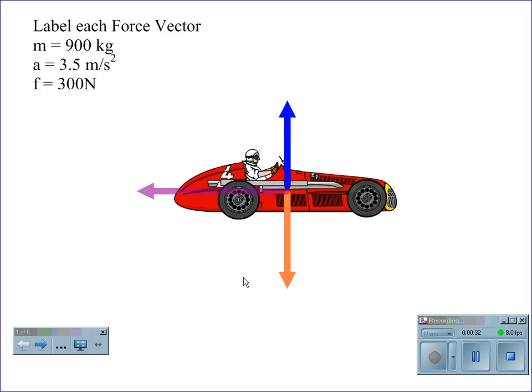We would then look for any force of resistance, in this case friction, and then we would look for the force that's propelling the car forward, which would eventually give us our acceleration.